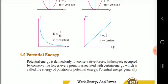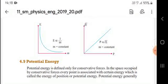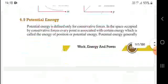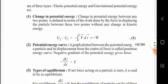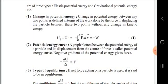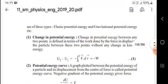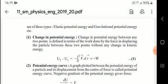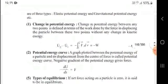Next, potential energy. Potential energy is defined only for conservative forces. In the space occupied by a conservative force, every point is associated with a certain energy called the energy of position, or potential energy. The change in potential energy between any two points is defined in terms of work done by the force in displacing the particle between the two points without any change in kinetic energy.